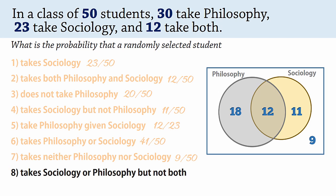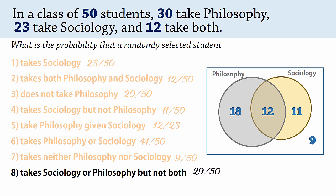Finally for number 8, the students that take sociology or philosophy but not both are the 18 taking only philosophy here, and the 11 taking only sociology here. Adding 18 and 11, we have 29 over 50 for the probability, and that gives 0.58.